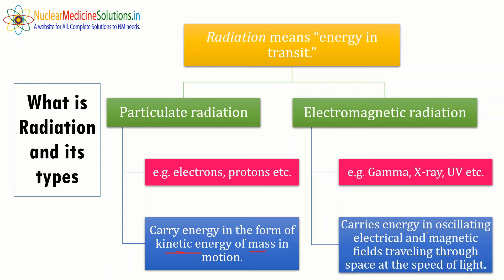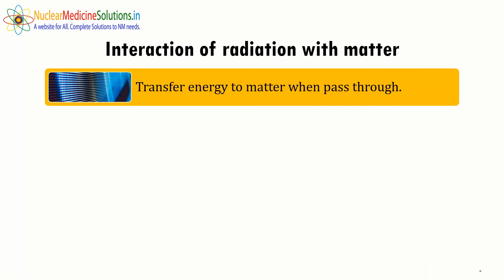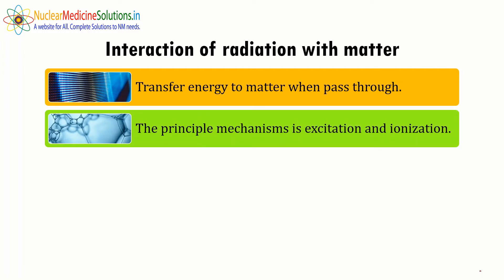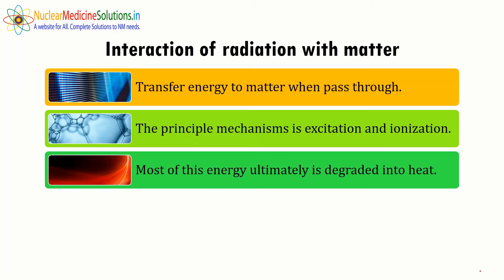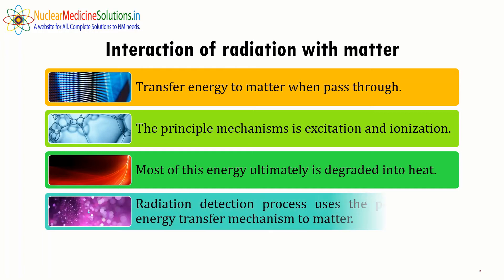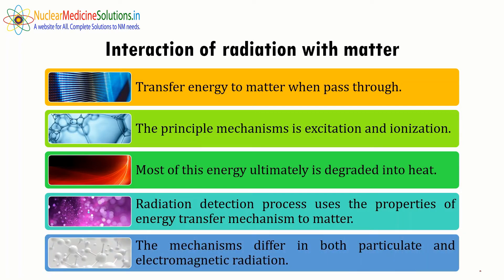Electromagnetic radiations carry energy in oscillating electrical and magnetic fields traveling through space at the speed of light. When radiation passes through matter, it transfers energy, and the principal mechanisms of energy transfer are excitation and ionization. Most of this energy is ultimately degraded into heat. The radiation detection process uses the property of this energy transfer mechanism, which differs between particulate and electromagnetic radiation.